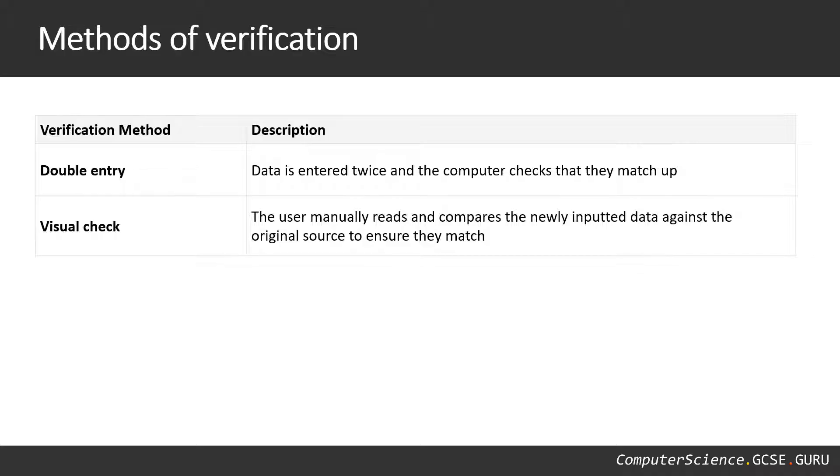And the final method is a visual check. So the user manually reads and compares the newly inputted data against the original source to ensure that they match. This is something you may have come across and not even realized that you're performing a visual check, that you're doing some verification.